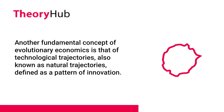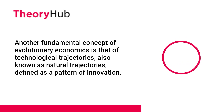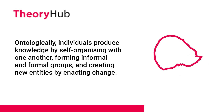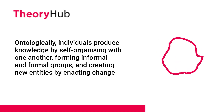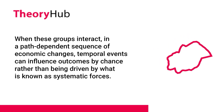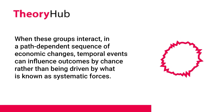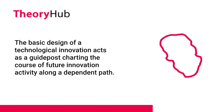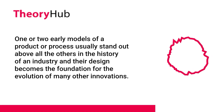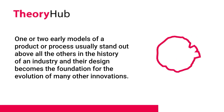Another fundamental concept of evolutionary economics is that of technological trajectories, also known as natural trajectories, defined as a pattern of innovation. Path dependency is closely associated with the concept of technological trajectory. Ontologically, individuals produce knowledge by self-organizing with one another, forming informal and formal groups, and creating new entities by enacting change. When these groups interact in a path-dependent sequence of economic changes, temporal events can influence outcomes by chance rather than being driven by systematic forces. The basic design of a technological innovation acts as a guidepost charting the course of future innovation activity along a dependent path. One or two early models of a product or process usually stand out above all others in the history of an industry, and their design becomes the foundation for the evolution of many other innovations.